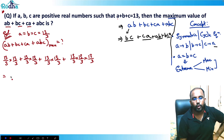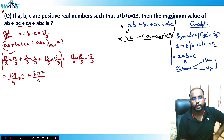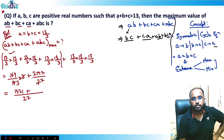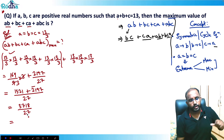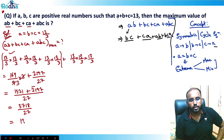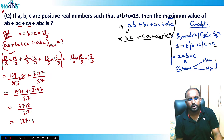Solving this, I get 169/9 times 3, plus 13 cubed which is 2197 divided by 27. Taking 27 as the LCM: 169 times 9 is 1521, plus 2197 gives 3718 over 27. Solving that gives approximately 137.7.